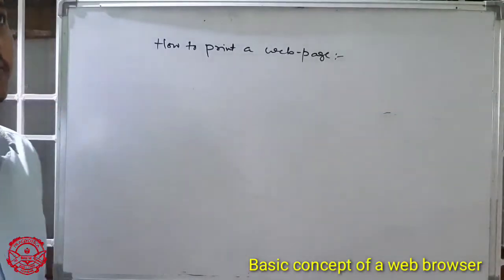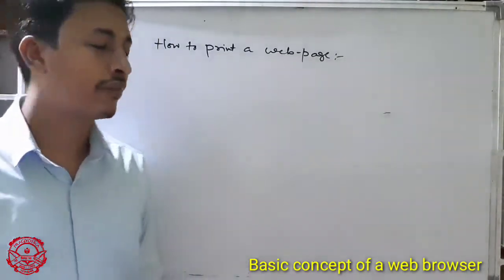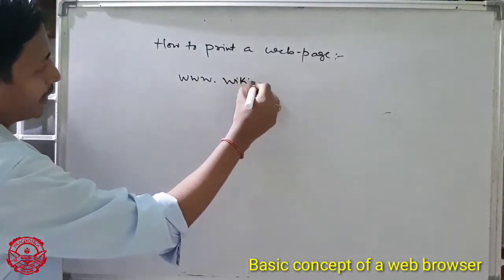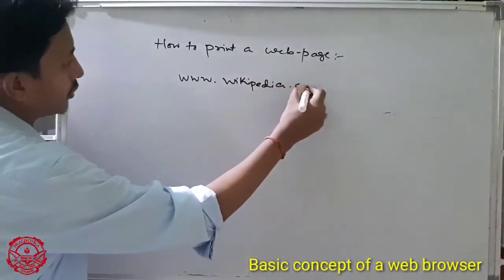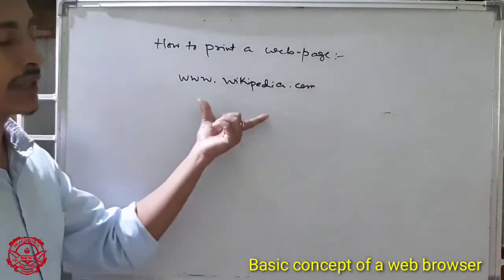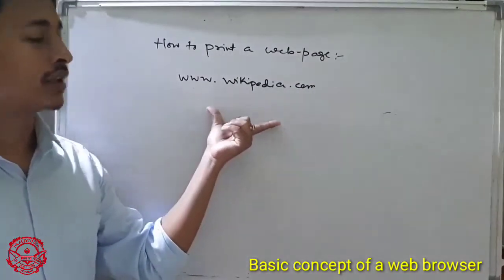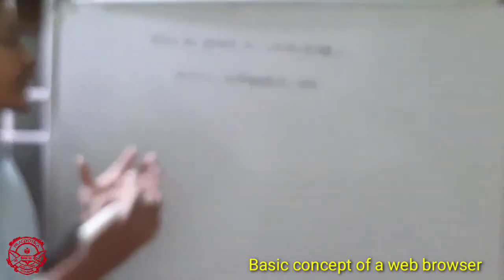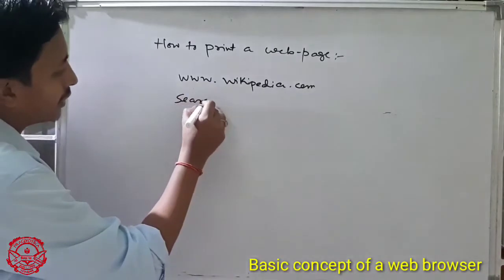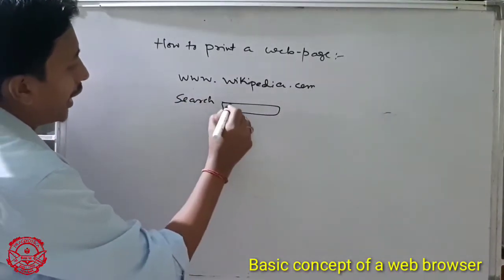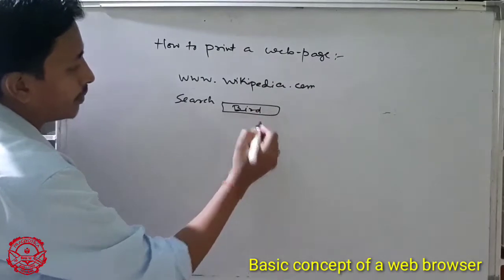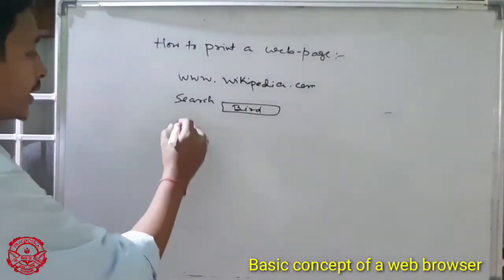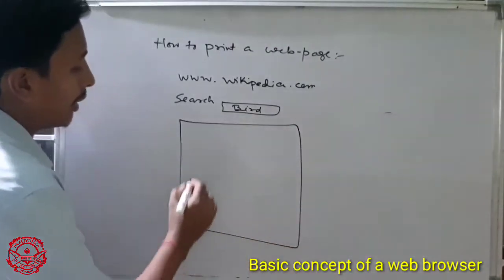So print a web page means what? When you visit a website, for example search www.wikipedia.com. Wikipedia is a website where you search any information. When you search any information, say like I will search bird information. After that, you search on this topic and you will get a lot of information about birds.